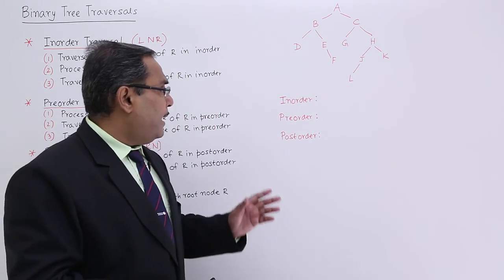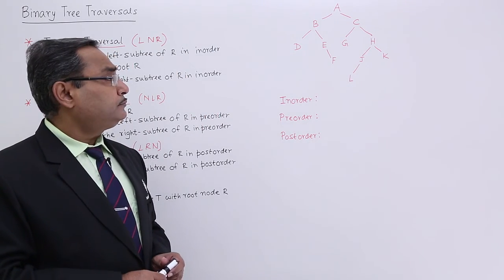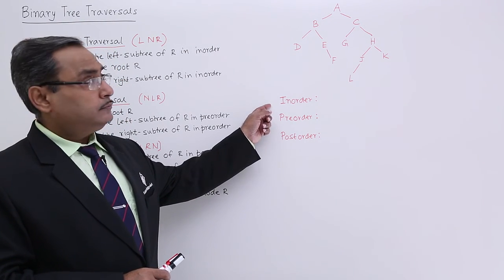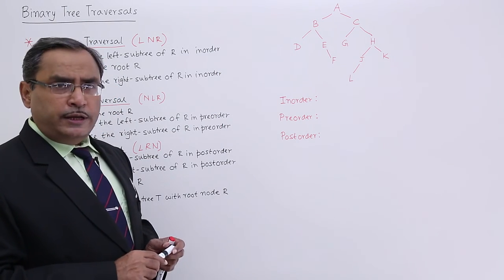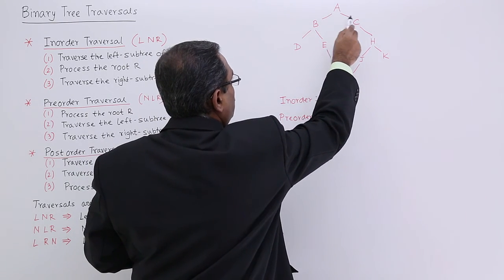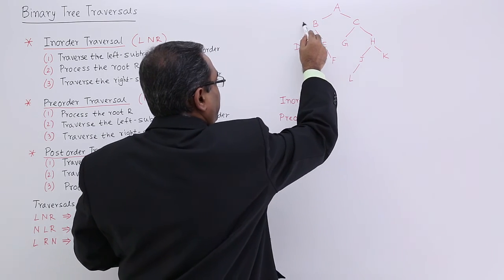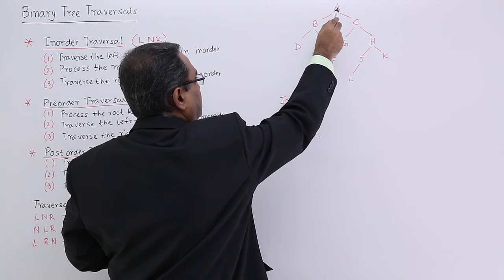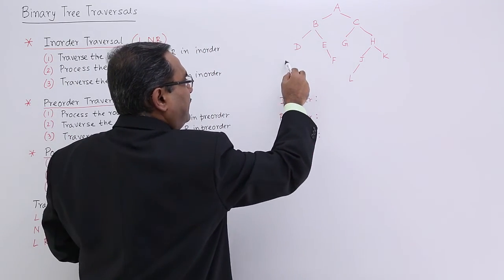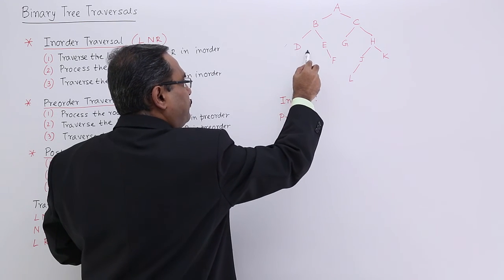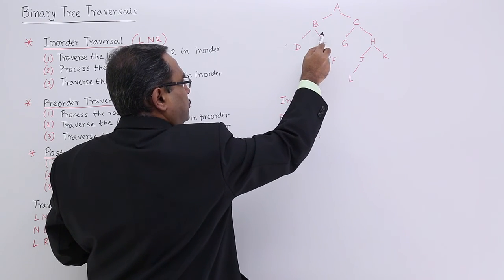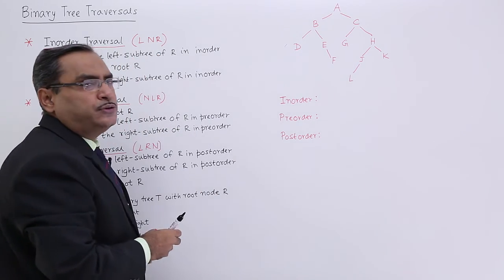Let us apply this logic on a particular example. A binary tree is given, and we are going to do the inorder traversal. In this binary tree, this is my root, this is the left subtree, and that is my right subtree. In the left subtree I shall process that first, then go for the root, then traverse the right subtree. Left subtree traversal means again that subtree has its own root, left subtree, and right subtree — so I traverse left, process root, then traverse right.